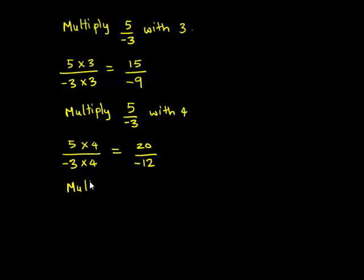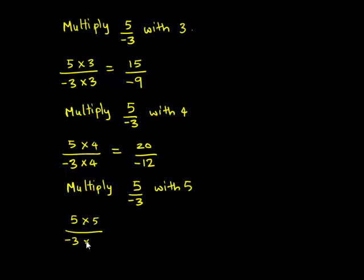The next equivalent number of 5 upon negative 3 can be obtained when we multiply 5 upon negative 3 by 5. This gives 5 times 5 is 25, upon negative 3 times 5 is negative 15.